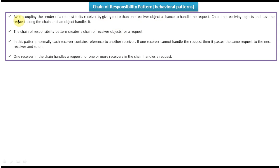The first explanation: avoid coupling the sender of the request to its receiver by giving more than one receiver object a chance to handle the request. Chain the receiving objects and pass the request along the chain until an object handles it. That is the first explanation. Now the second explanation: the Chain of Responsibility pattern creates a chain of receiver objects for a request.